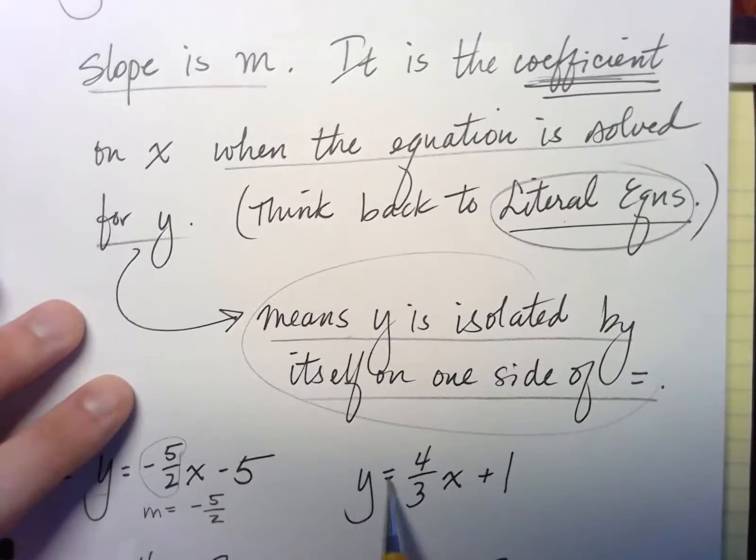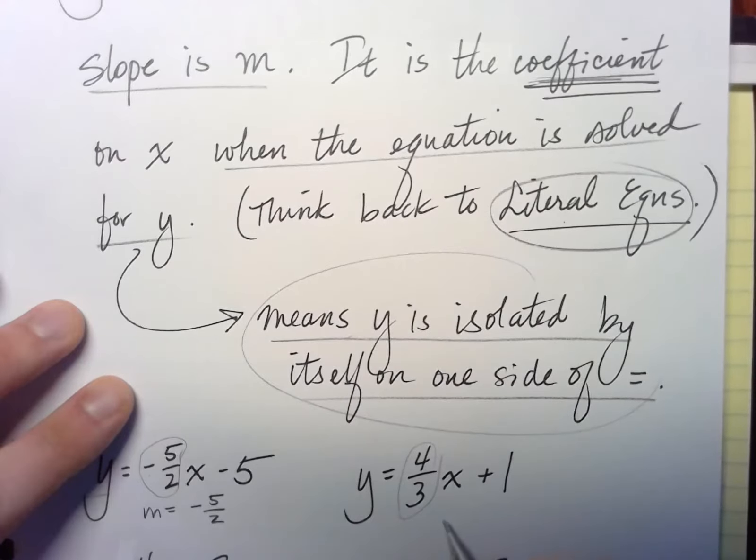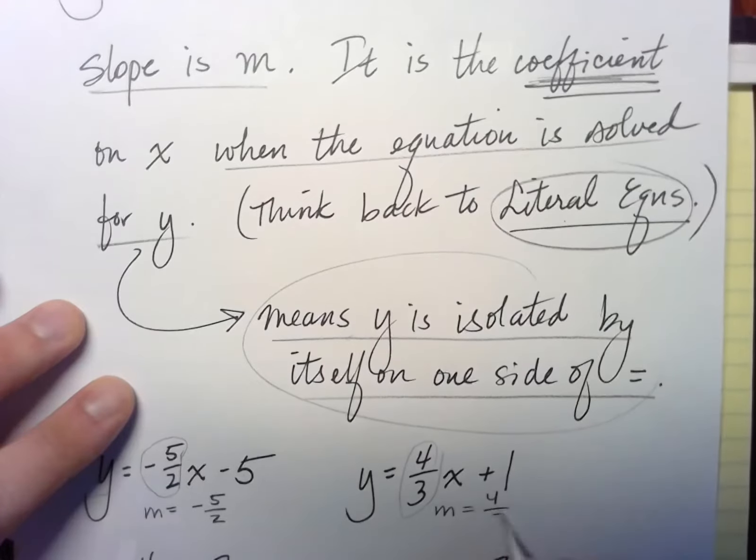Okay. Here, I know y equals 4 thirds x plus 1. I know this is in slope-intercept form, again, because the y is isolated. So my slope is just going to be that coefficient on the x. So here, m equals 4 thirds.